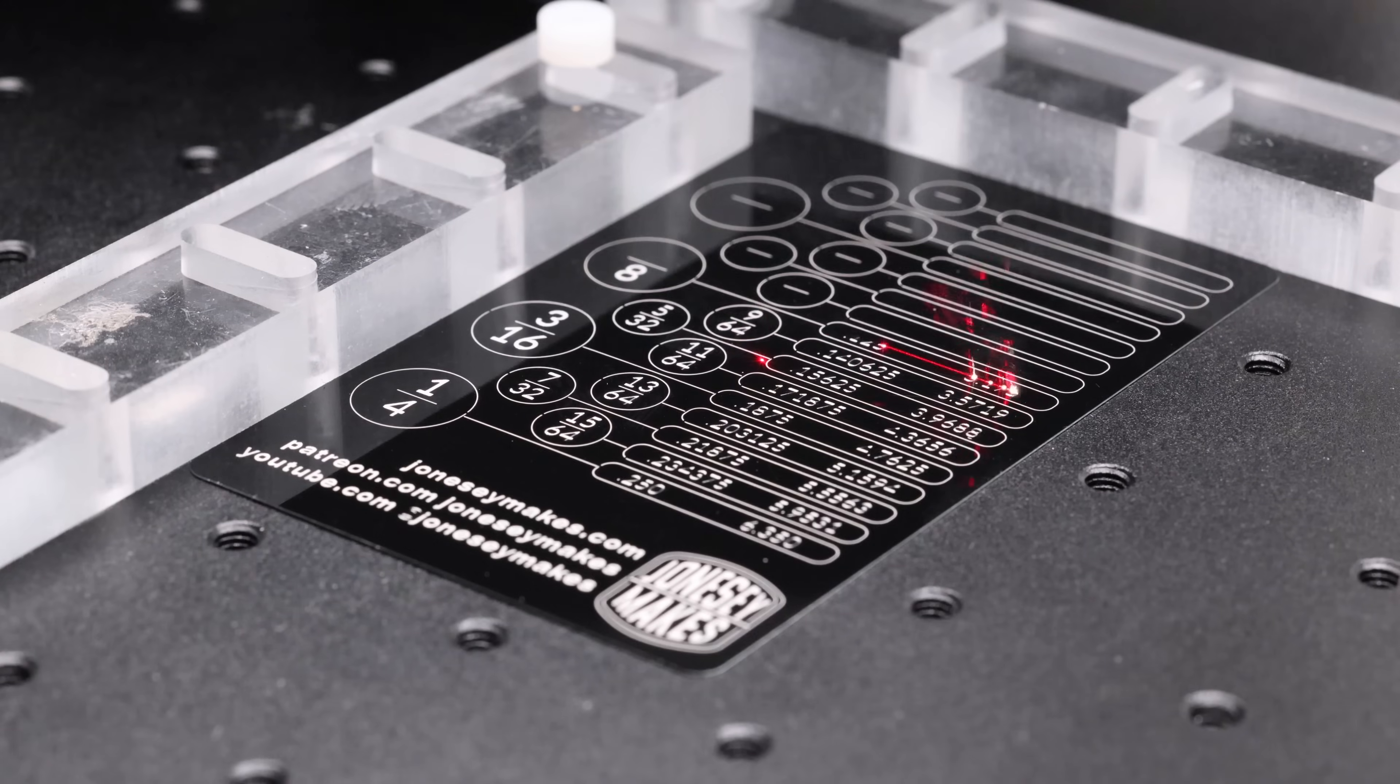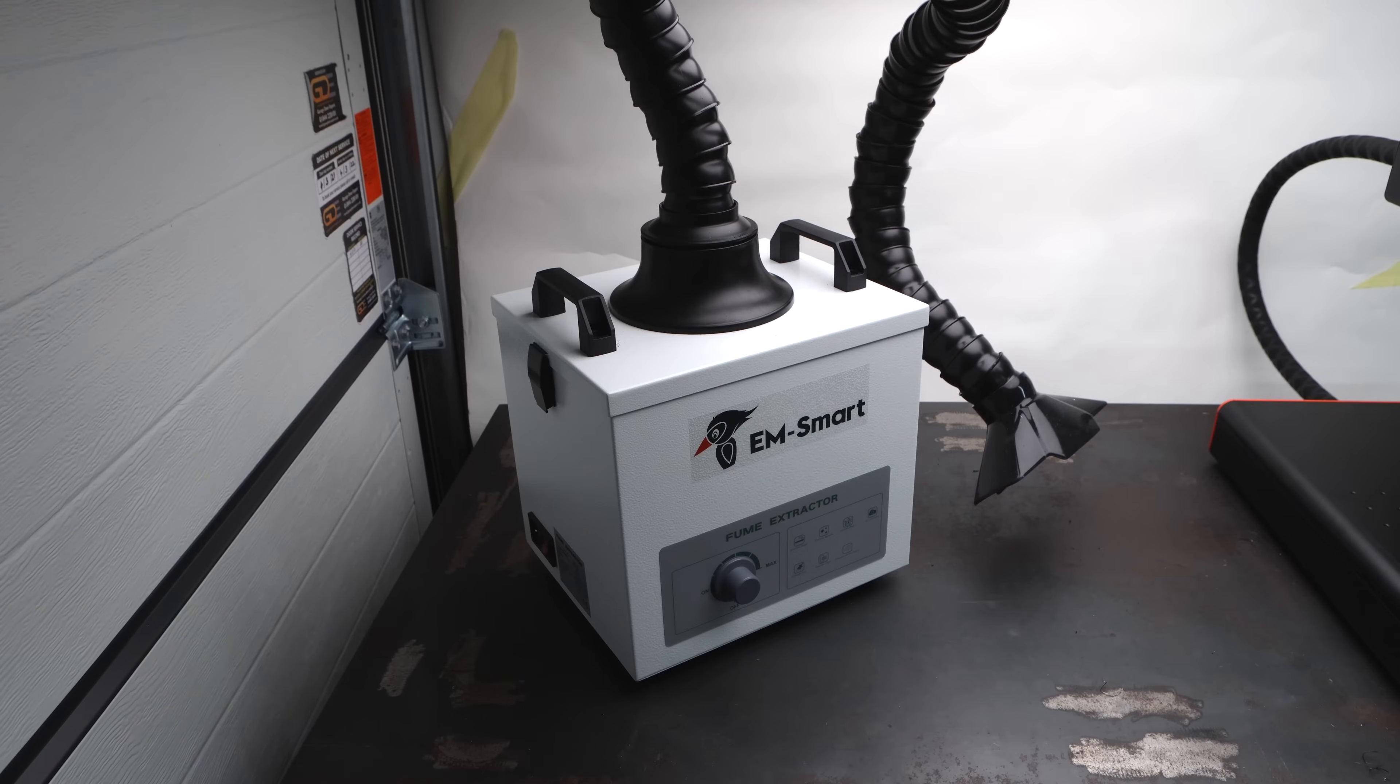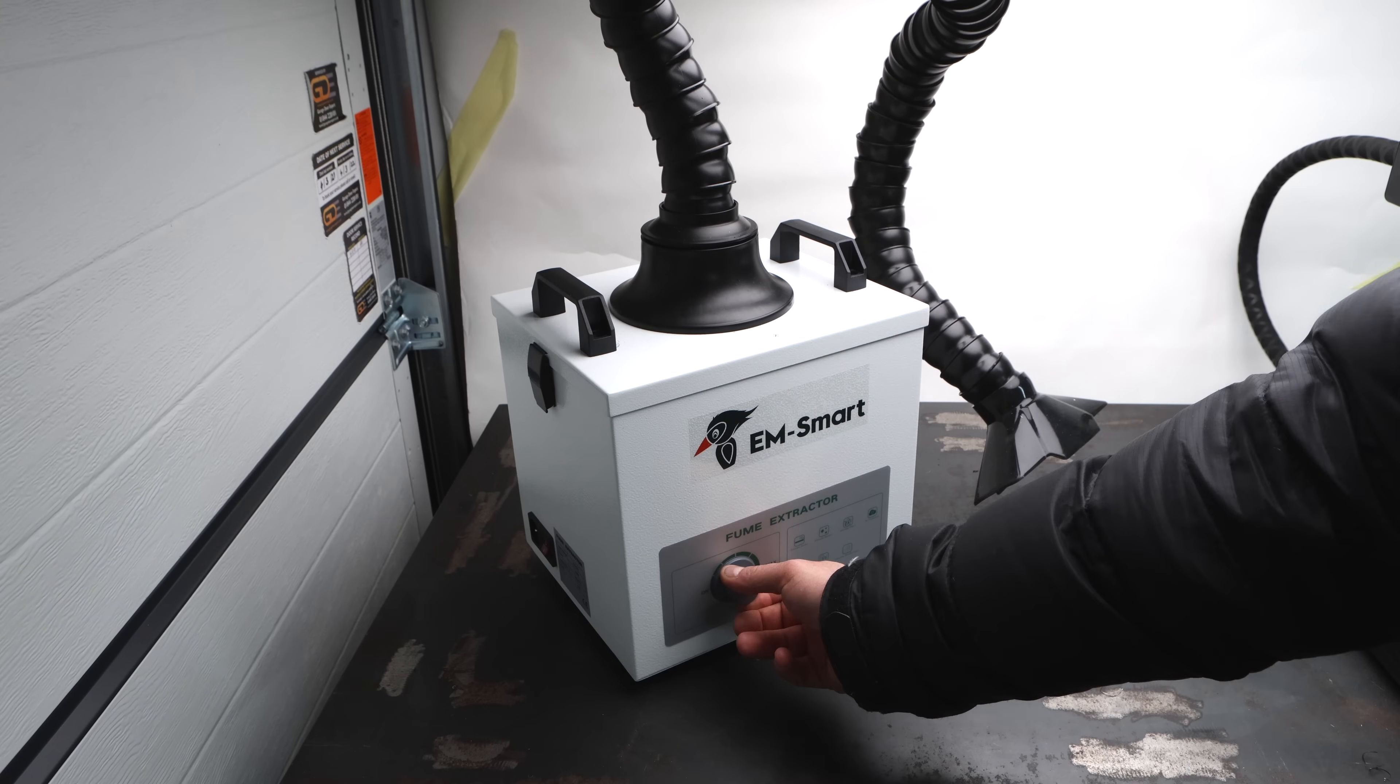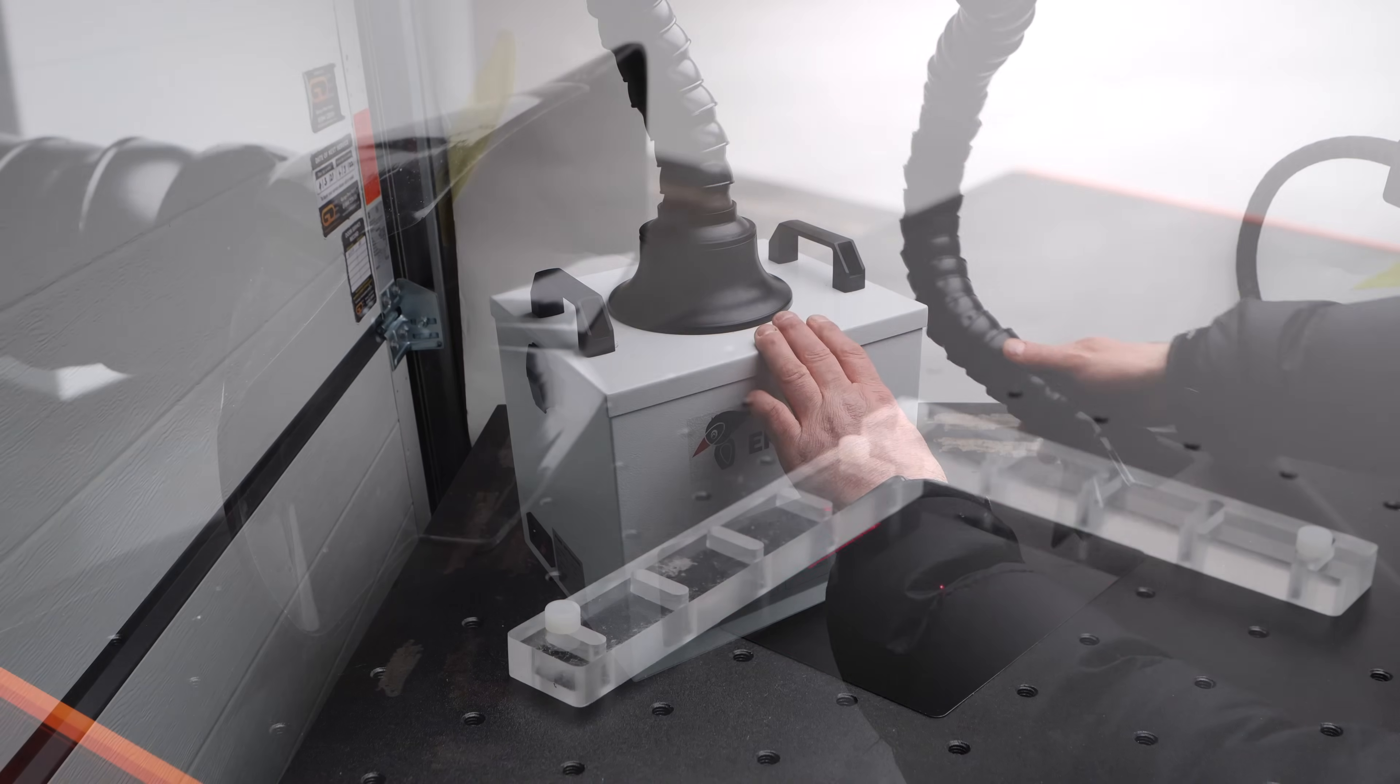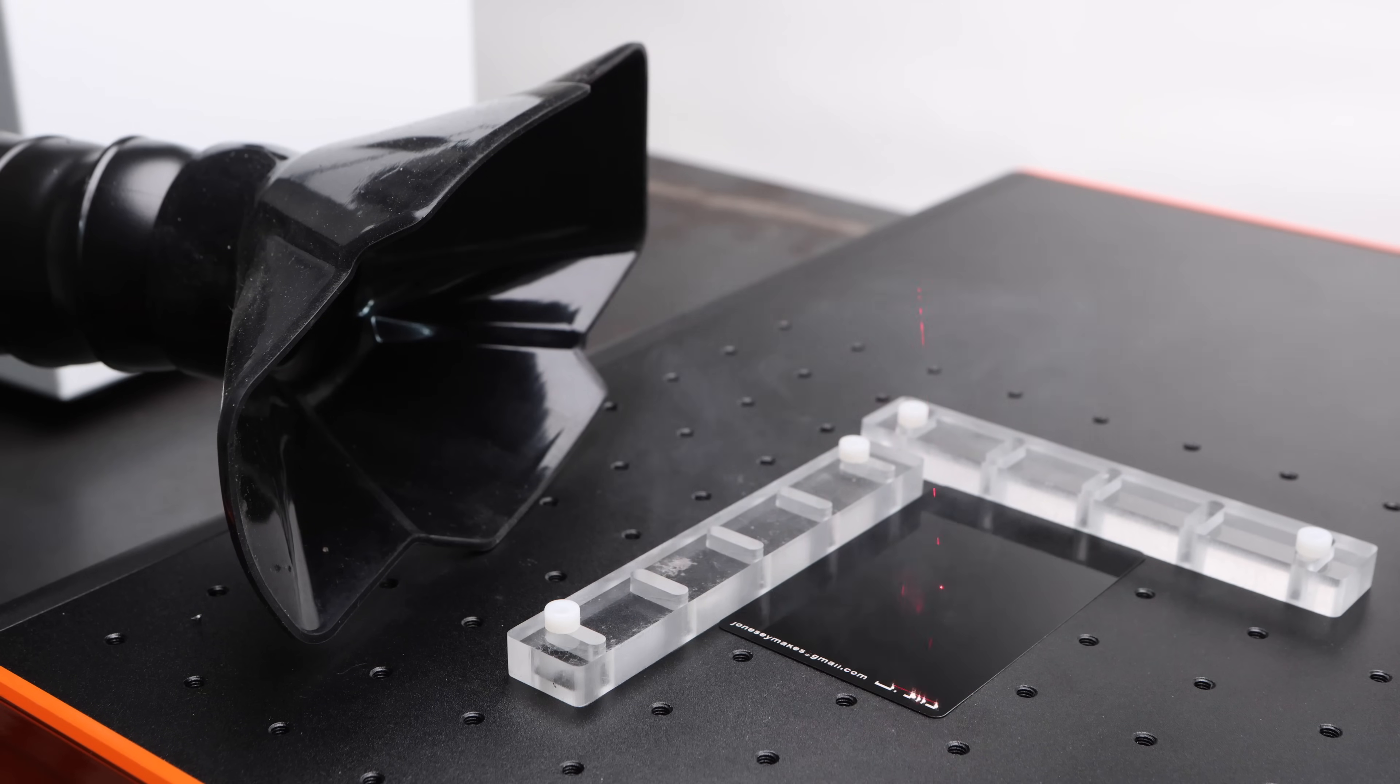And for these situations, EM Smart has produced a fume extractor. We've got this steel box here that houses a series of filters and a powerful fan, an electronic speed control and an omnidirectional hose. And hopefully you can see in this next shot here that it is actually quite effective.